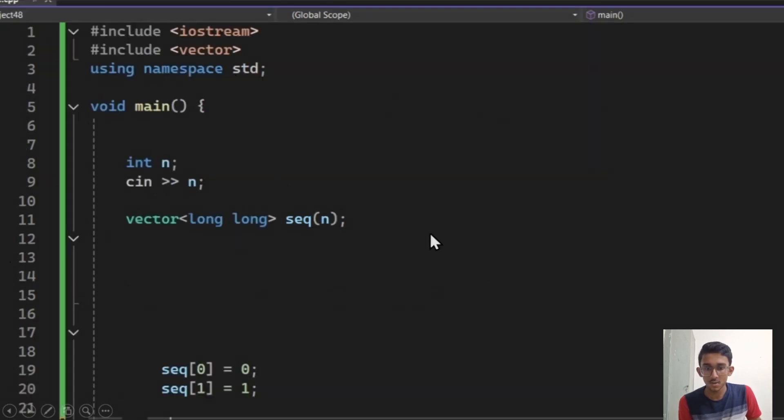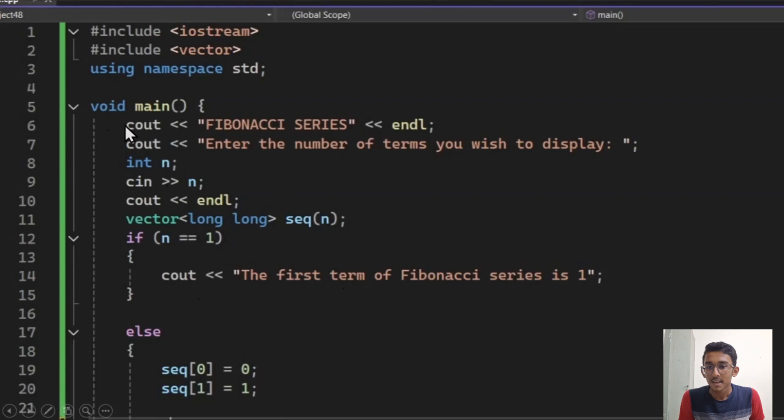Now this code I have written isn't completely perfect. I need to put some output messages and also there's a special case for n equal to 1. For that I have to use different grammar basically. So I have made this display message Fibonacci series telling the user to input the number of terms. Then I have created a special case if n equal to 1. I have just simply displayed the first term of Fibonacci series as 1.